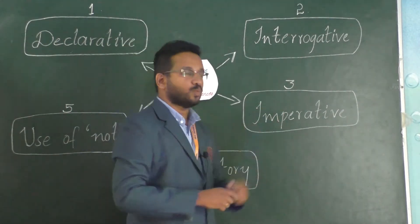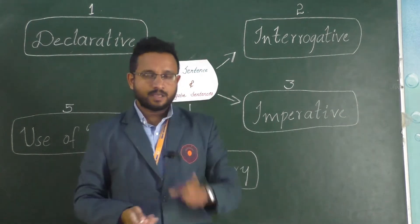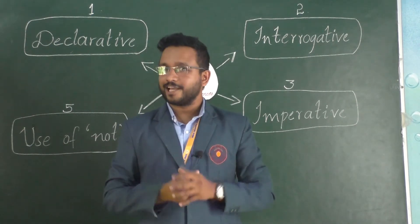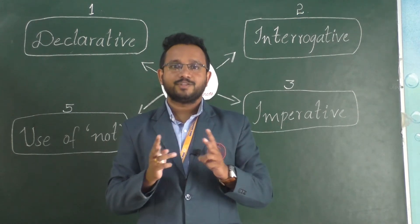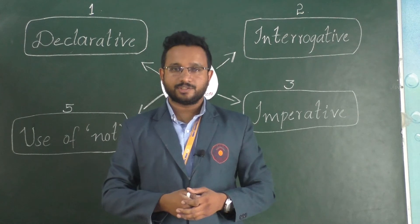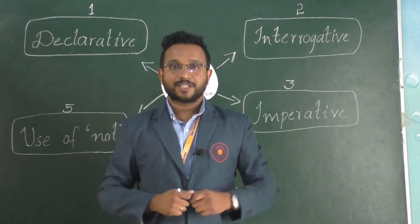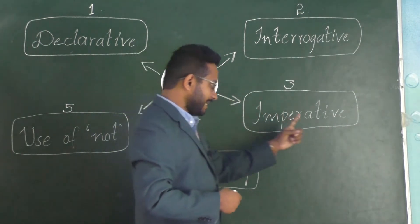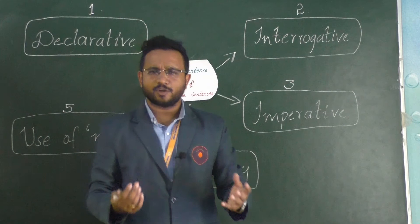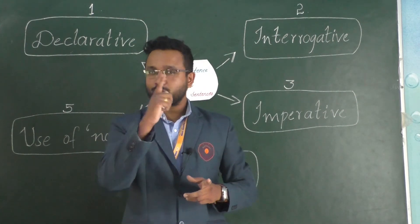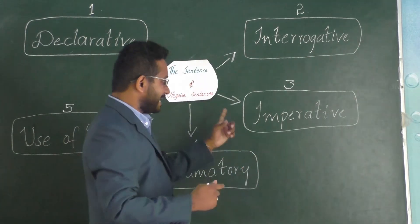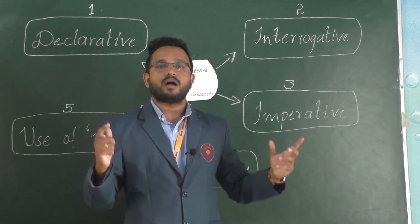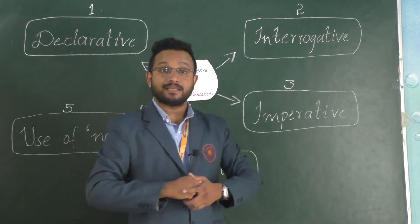Let's come to the third type: imperative statement. Be quiet. Get out. Shut up. Have mercy on me. Please help me. They represent two different types: commands or orders — 'be quiet, be silent' — these are commands. Commands or orders are called imperative statements. Together with that, 'have mercy on me, please help me' — those are requests. Requests are also known as imperative statements. Therefore, commands and requests are known as imperative statements.